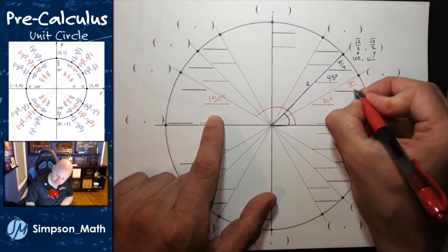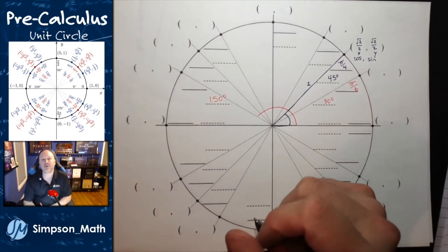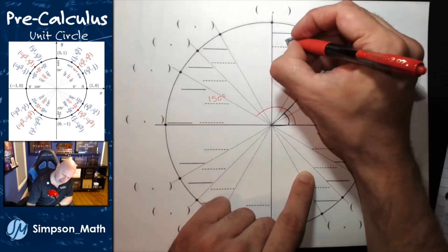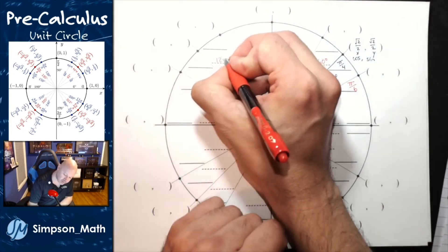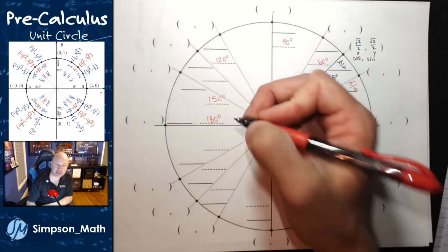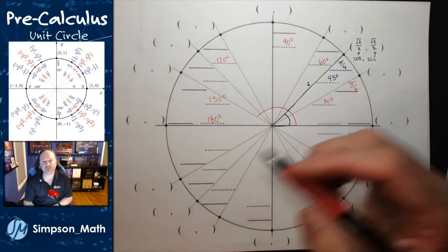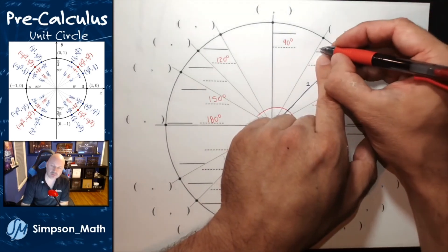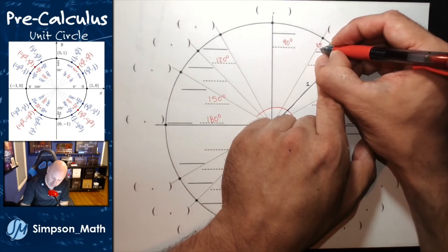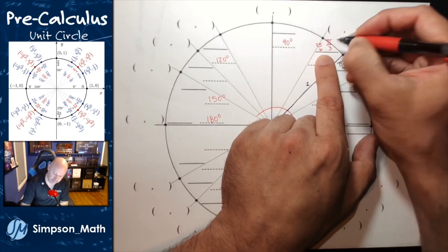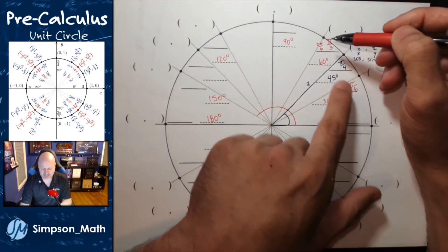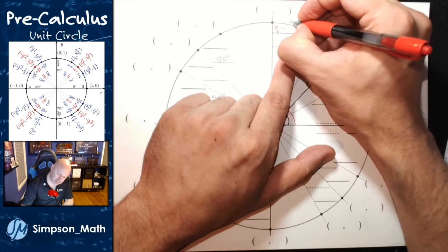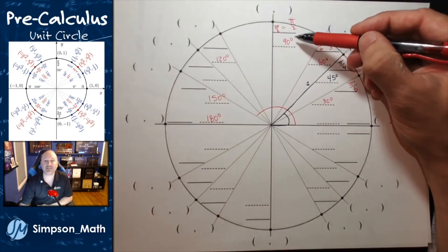I know 30 degrees is equivalent to pi over 6. So I can go along the circle and count by 30 degrees: 30, 60, 90, 120, 150 — of course a straight line is 180. I can do the same thing by counting by pi sixths: 1 pi/6, 2 pi/6, 3 pi/6 — which reduces to pi halves. Pi halves is equivalent to 90 degrees. Then 4 pi/6, which I'll call 2 pi thirds, and 5 pi/6 is the next.